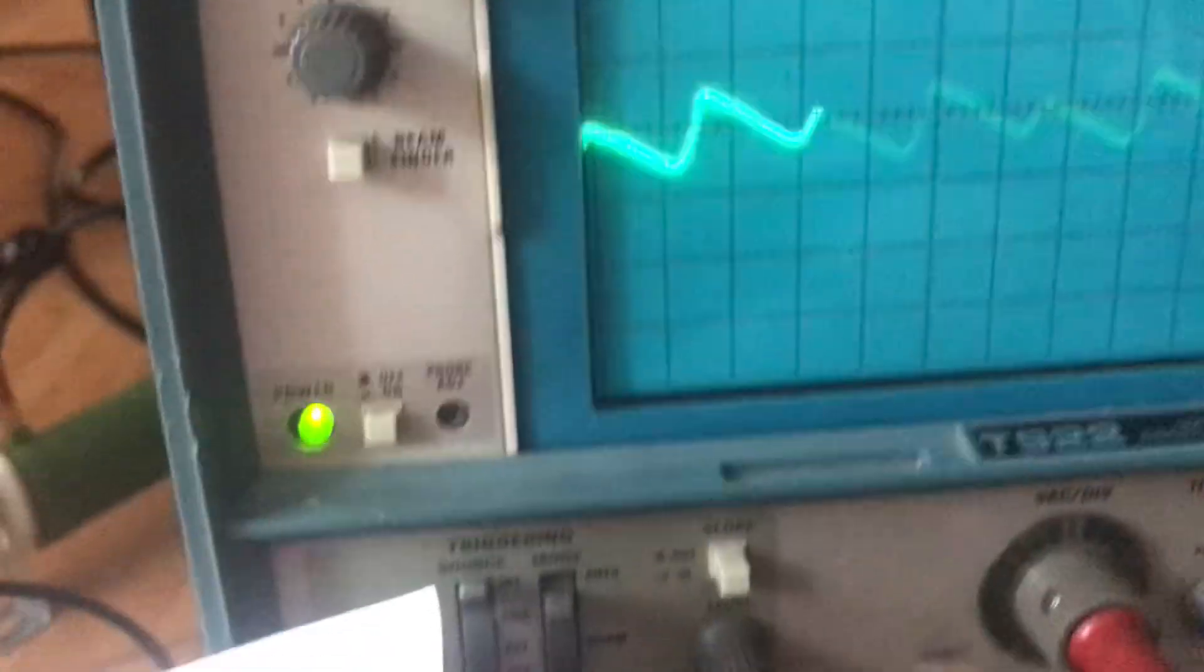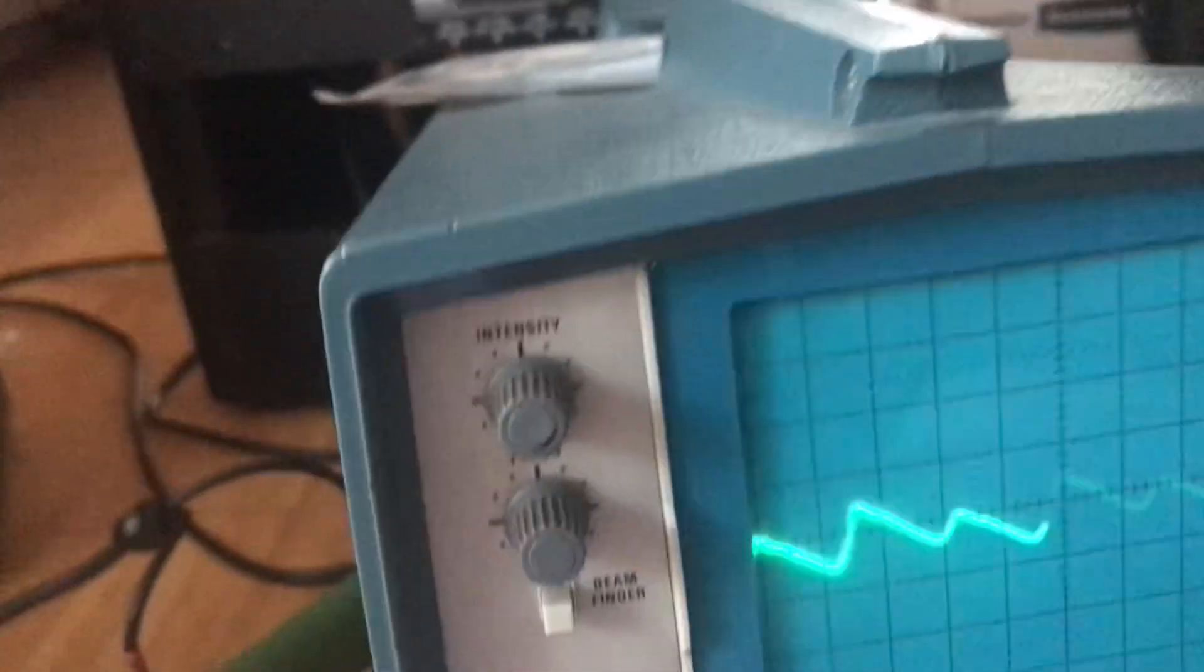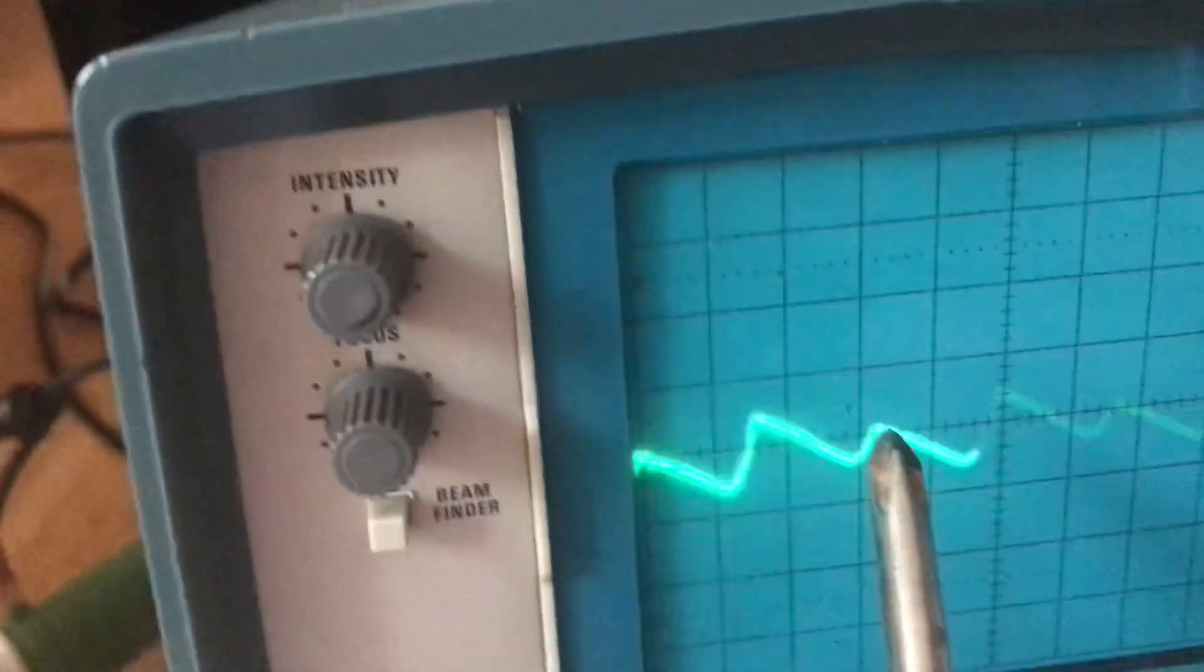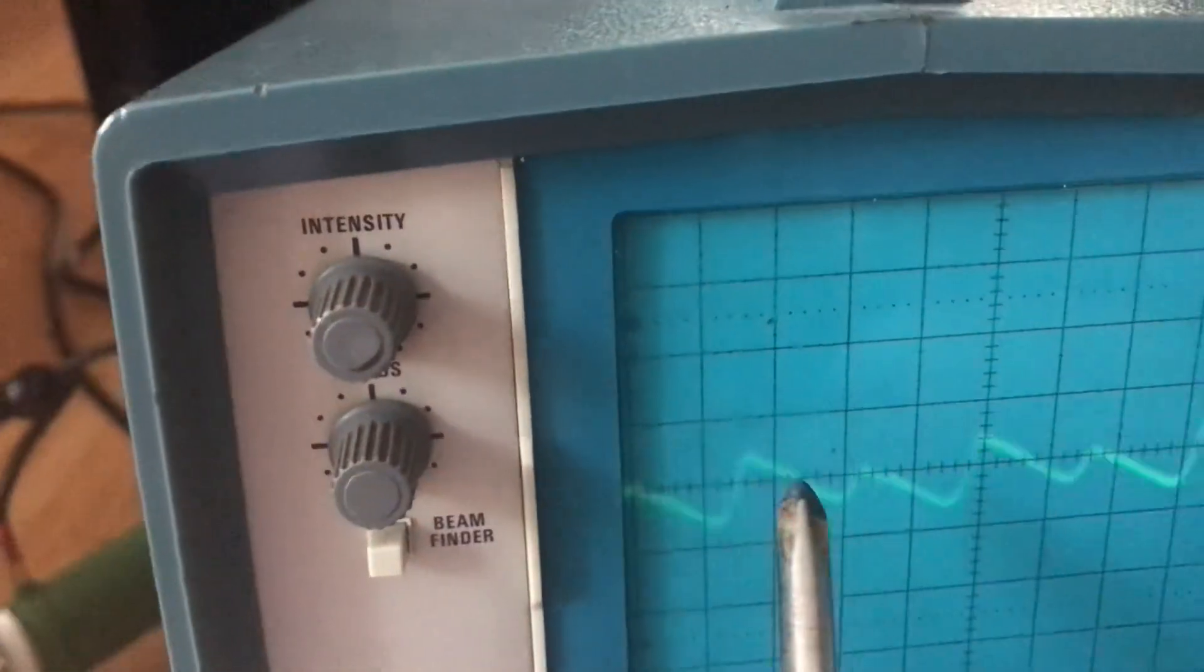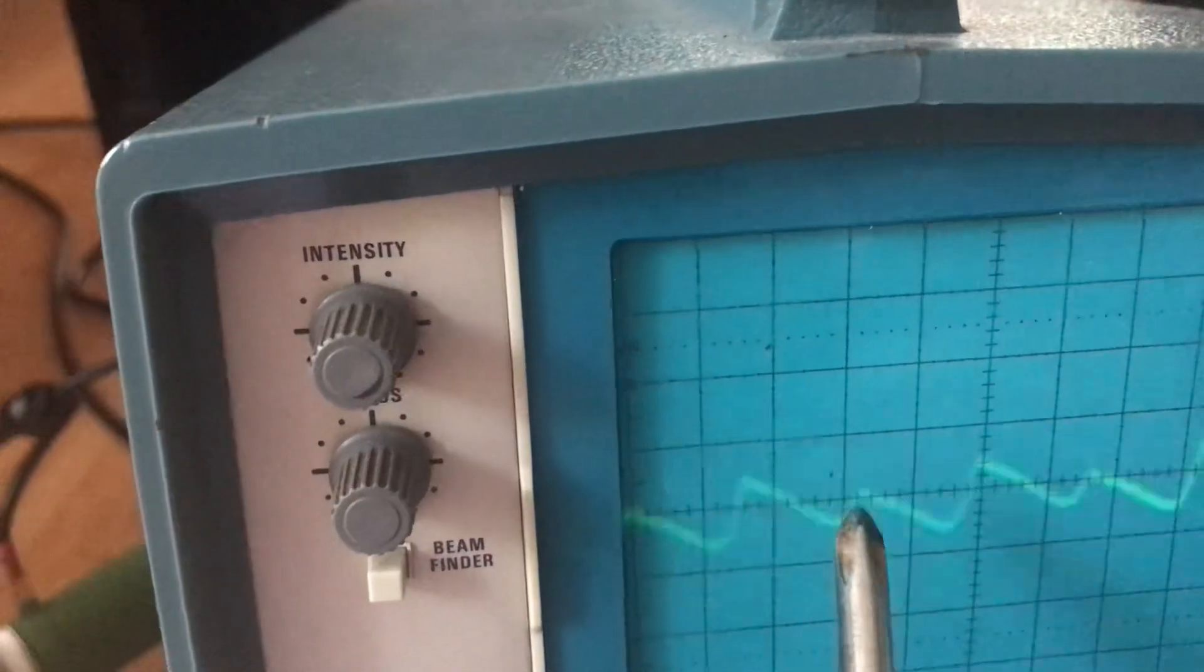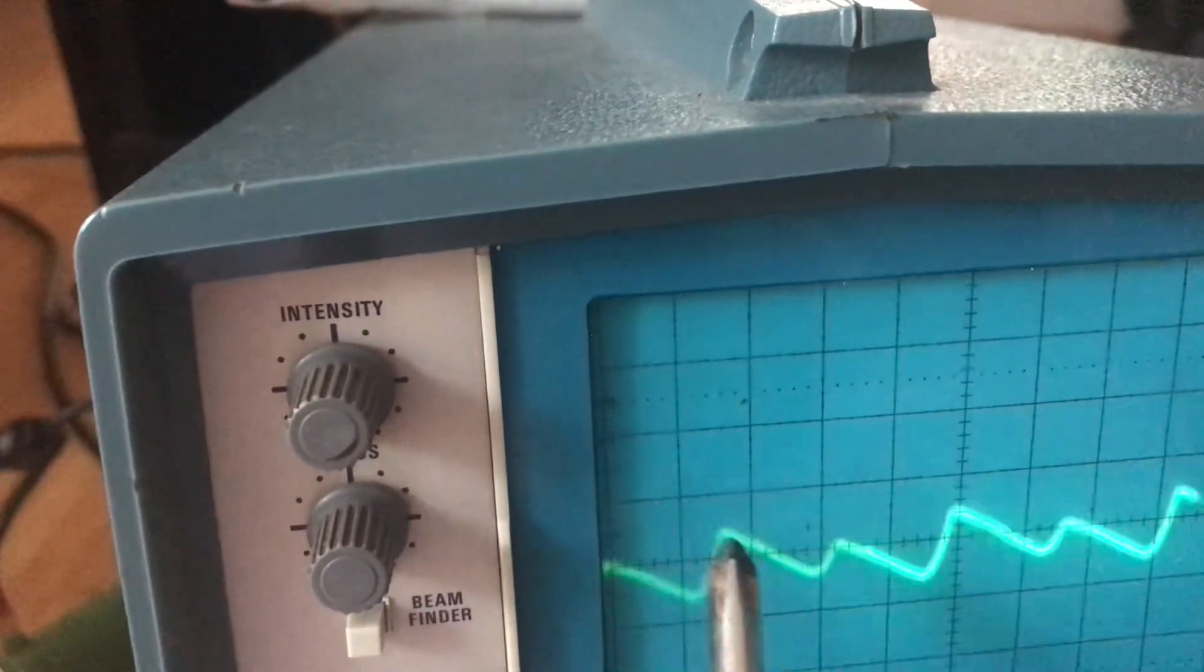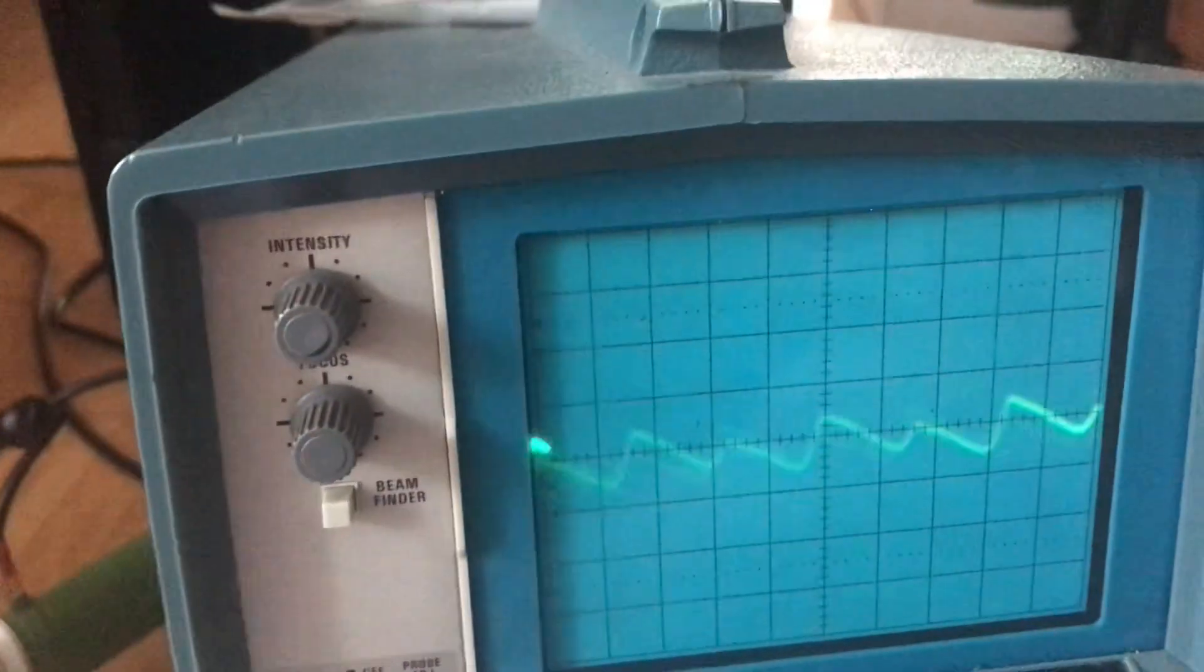First of all, this is 0.5 milliseconds per division, so from this peak to this peak is 120 hertz and peak to peak is 60 hertz. I already have noticed that there is a difference in amplitude, suggesting that one diode pair is not pulling its weight versus the other.